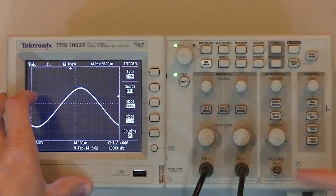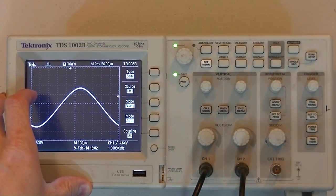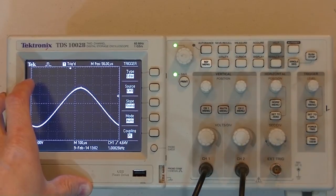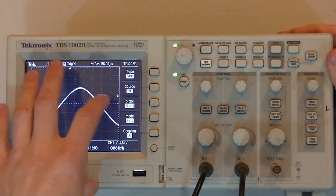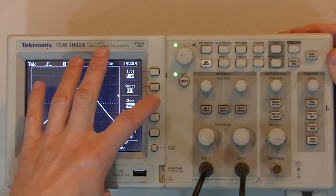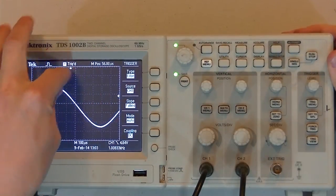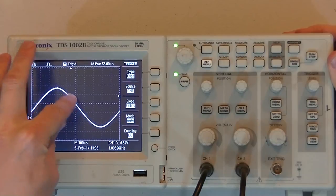So, we'll just move that back down. I could set my source to be channel two, or I could set it to be my external trigger. I could make it so it's a falling edge instead of a rising edge. So, here now, it's sinking down at the point where these two lines intersect.